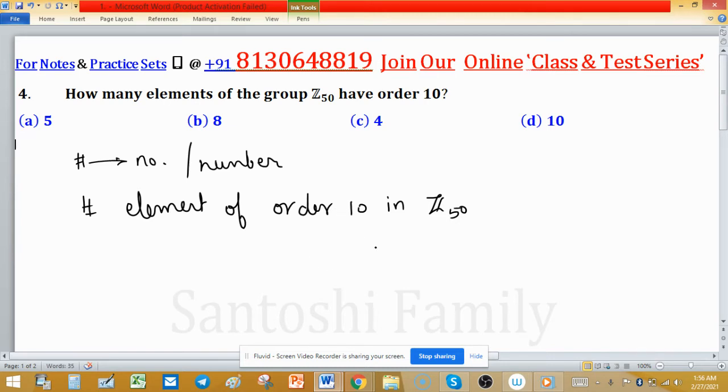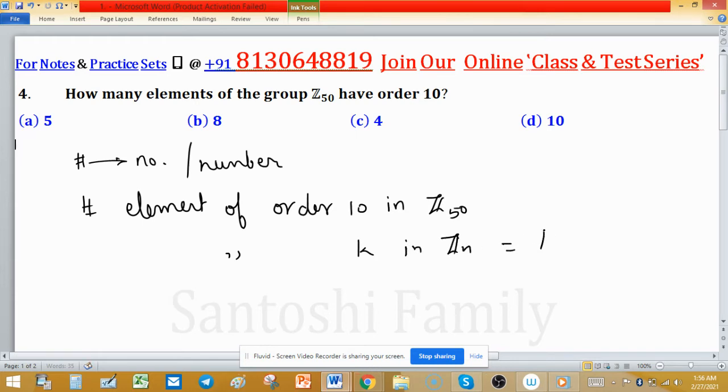The number of elements of order k in Zn will equal to φ(k) where k divides n, and 0 if k does not divide n. This is the formula. You can directly apply the phi function. Because 10 divides 50...